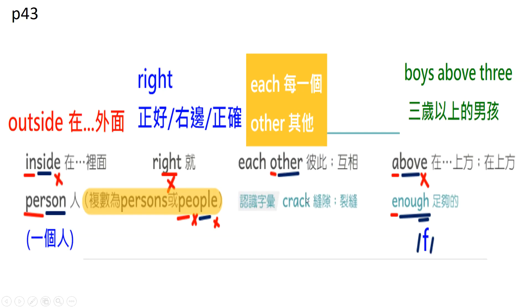43页的单字部分，每一个字念两次，然后再写笔记。Inside，在里面。Write，就。Each other，彼此。Above，在上方。Person，人。Crack，缝隙、裂缝。Enough，足够的。